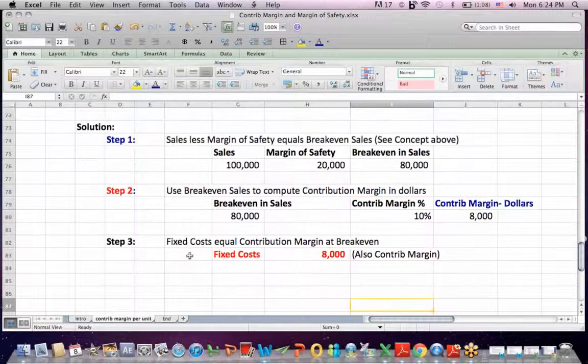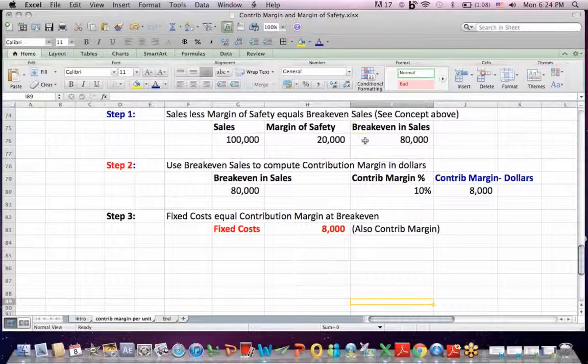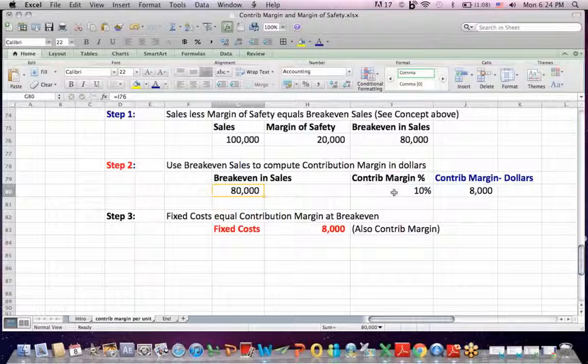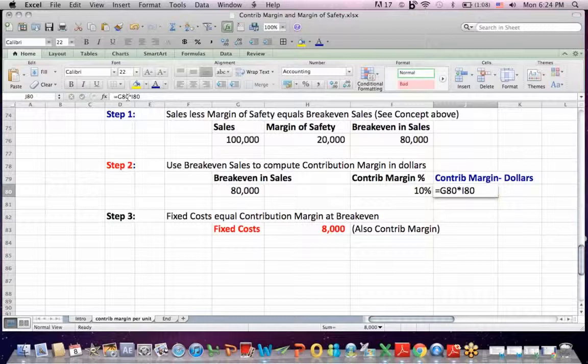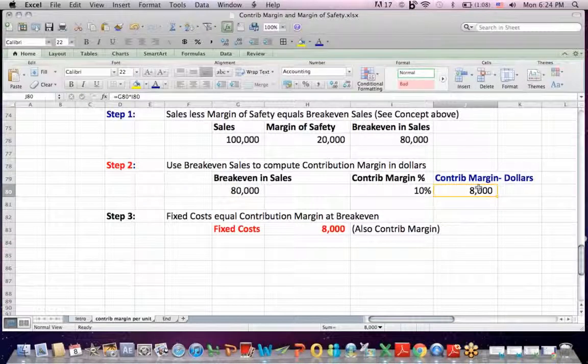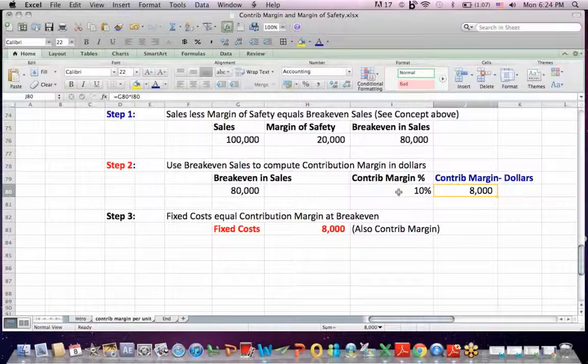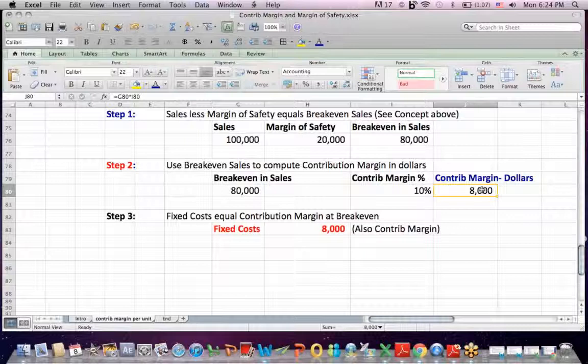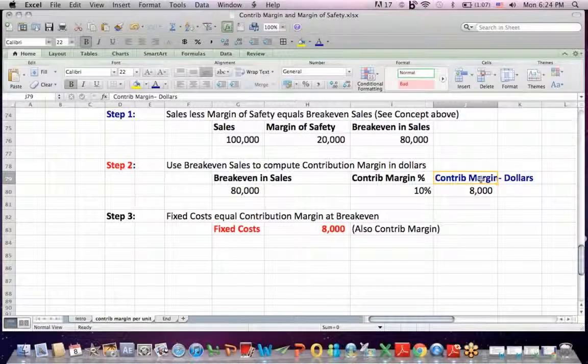Step two, I use the break even in sales that I just found out, and I divide contribution margin in percentages. If I multiply those two numbers together, I get a contribution margin of dollars of $8,000. Break even in sales times the contribution margin that's inside that break even level of sales, I get contribution margin in dollars.